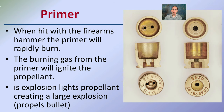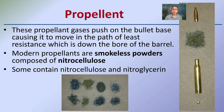The primer, when struck by the firearm's hammer, will cause it to rapidly burn. That burning gas from the primer will ignite the propellant — it's kind of that first stage — and then the propellant goes. This explosion of the propellant causes a large explosion that ultimately propels the bullet down the chamber and out the barrel. Those propellant gases push the bullet base, causing it to move along the path of least resistance down the bore of the barrel. Modern propellants are often smokeless powders composed of nitrocellulose; some contain nitroglycerin as well.